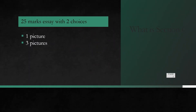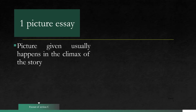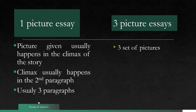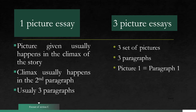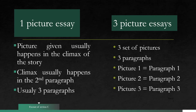The format of Section C: for a one-picture essay, the picture given usually happens at the climax of the story — it usually happens in the second paragraph, so we usually have three paragraphs. For three-pictures essays, we are given three sets of pictures and must write three paragraphs: paragraph one is about picture one, paragraph two is about picture two, and paragraph three is about picture three.